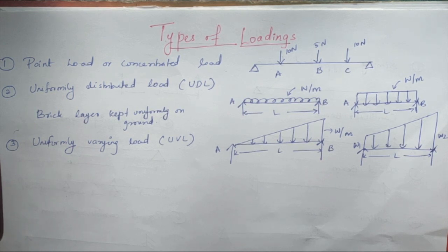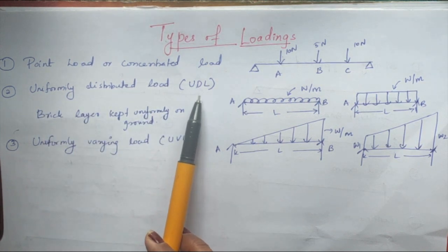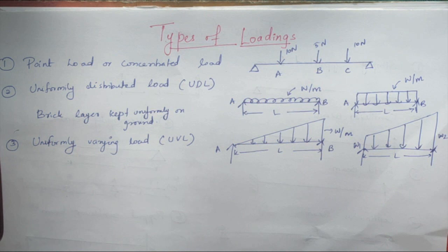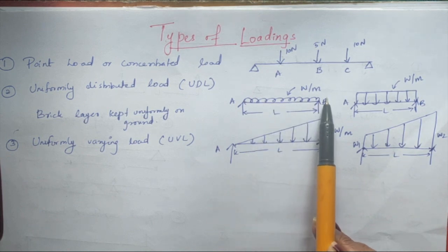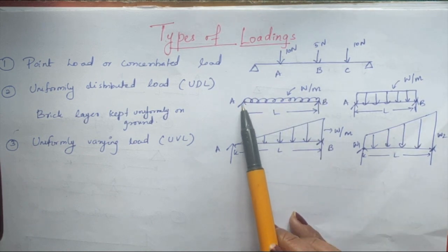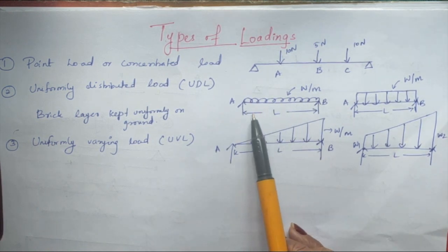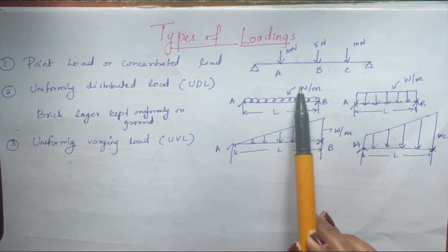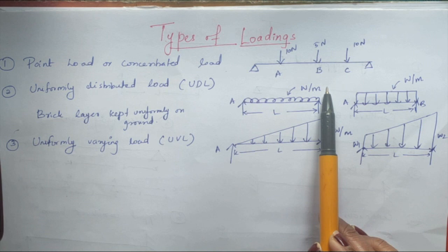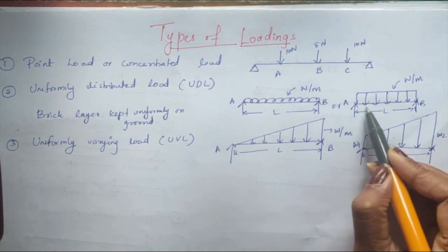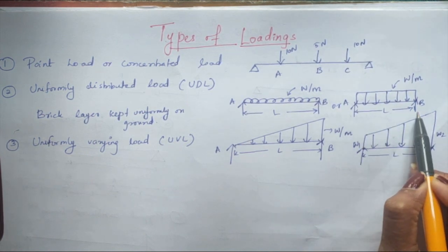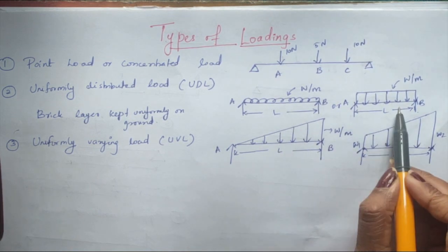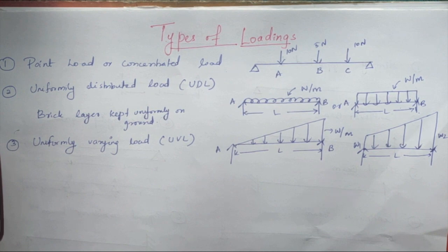The other two types you may be less familiar with. The first is uniformly distributed load, or UDL. It is shown like a string acting over a length. On a simply supported beam, the load acts over a length L with a value W per meter. Another way of representing UDL is in a rectangular format, where W per meter is the height and L is the length.